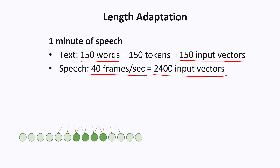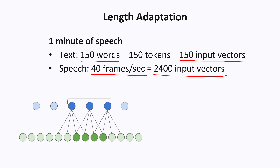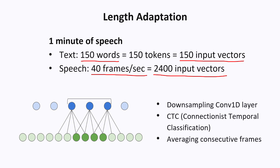Therefore, it is recommended to have some kind of length adaptation layer — a layer that compresses the output of the speech encoder into a shorter sequence that is easier for the LLM to work with. This can be done in several different ways, such as using a downsampling Conv1D layer, adding a CTC layer, or simply by averaging consecutive frames.